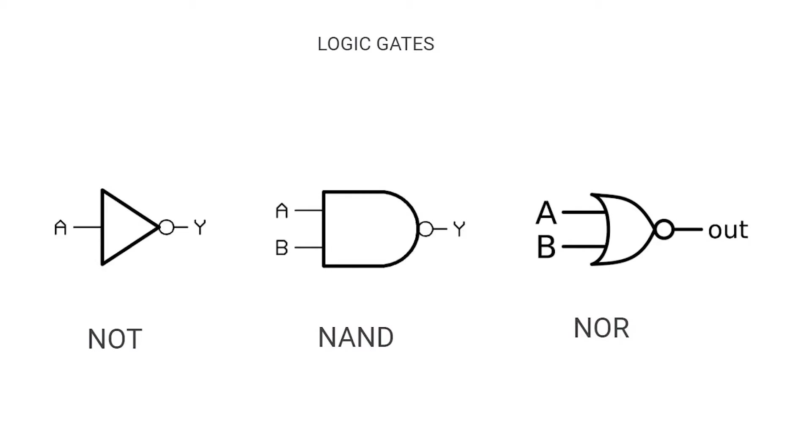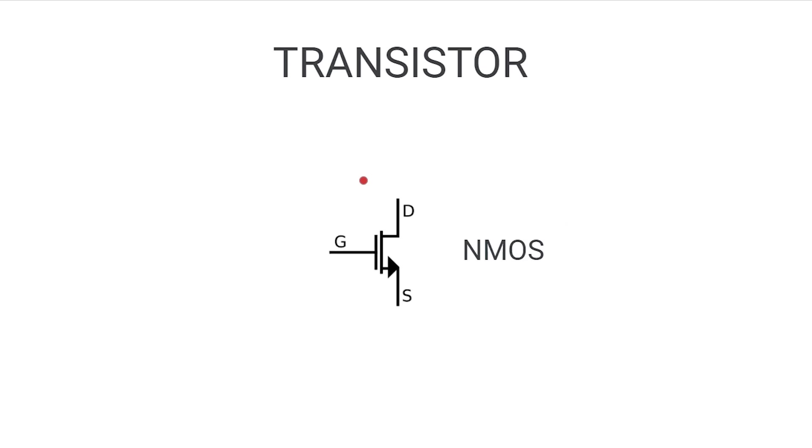So all of these gates are actually implemented using something called a transistor. You might have actually heard that the invention of the transistor has allowed all of this digital infrastructure that we have around us. But how does it fundamentally work? The way that it works is that this thing is basically a voltage controlled switch.